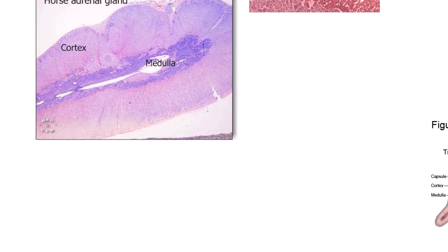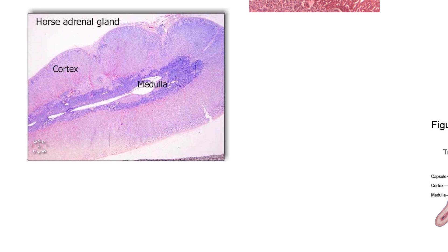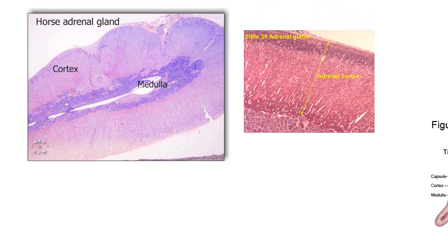Now we're ready to do some histology. Here's the horse adrenal gland that's been taken out and stained. We've got a nice cortex showing here, and then the medulla is a darker staining tissue. You might ask what these openings are — they're usually blood vessels. There are a lot of blood vessels, and this is where the hormones produced by the cortex or medulla drain out via the adrenal vein.